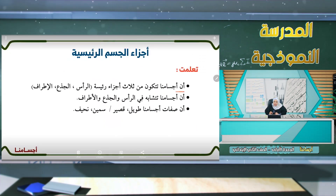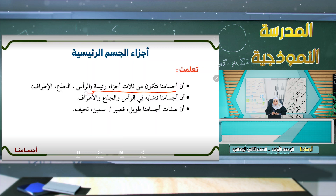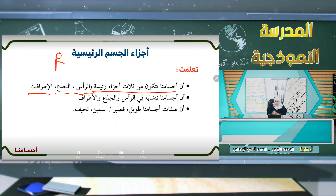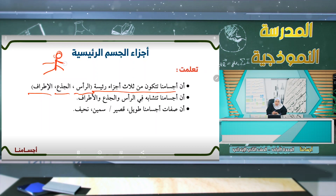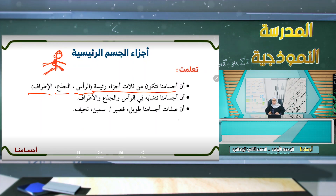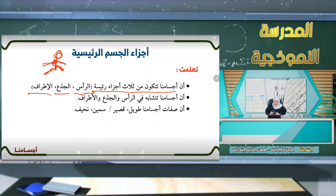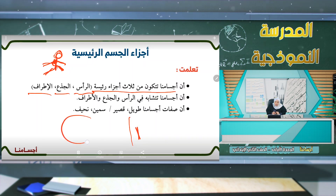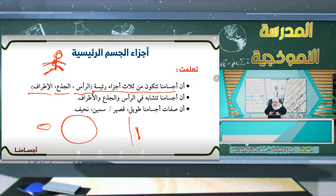نقرأ معاً: أجسامنا تتكون من ثلاثة أجزاء رئيسية هي رأس وجذع وأطراف. أجسامنا تتشابه في الرأس والجذع والأطراف. وإن صفات أجسامنا تختلف في الحجم والطول، فهناك طويل وقصير وسمين ونحيف.